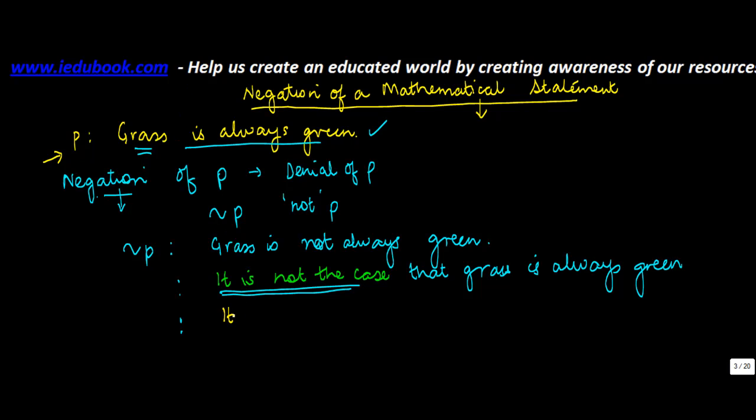'It is false that grass is always green.' So you can simply write 'grass is not always green,' or you can use these two phrases, namely 'it is not the case' or 'it is false that grass is always green.'